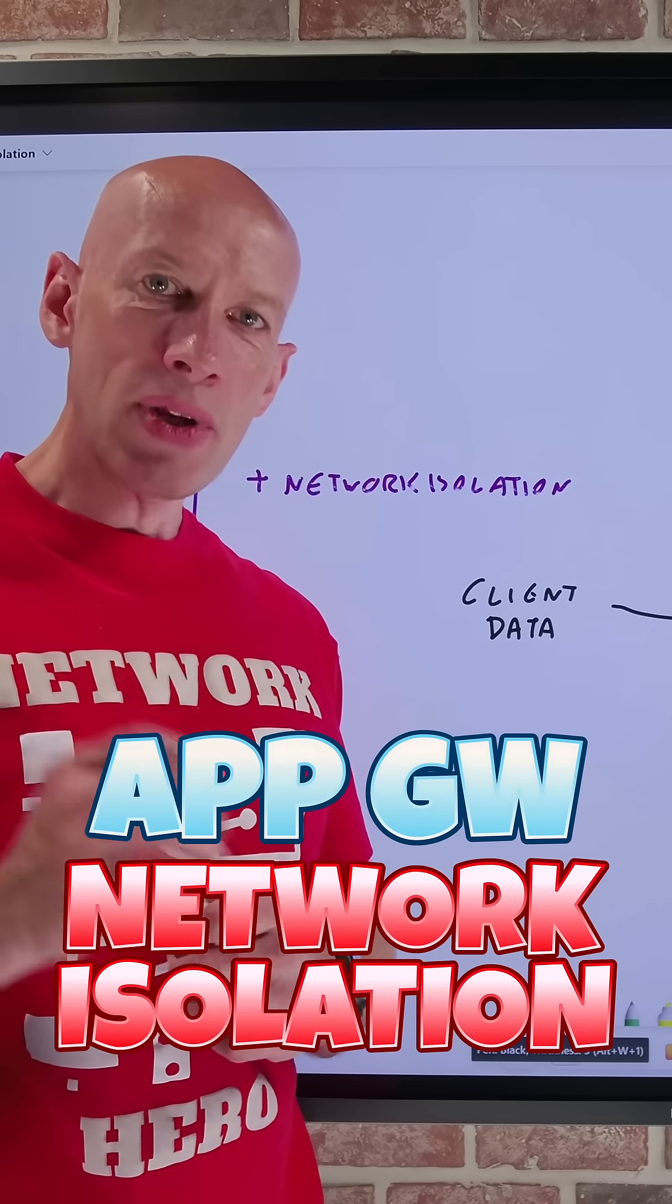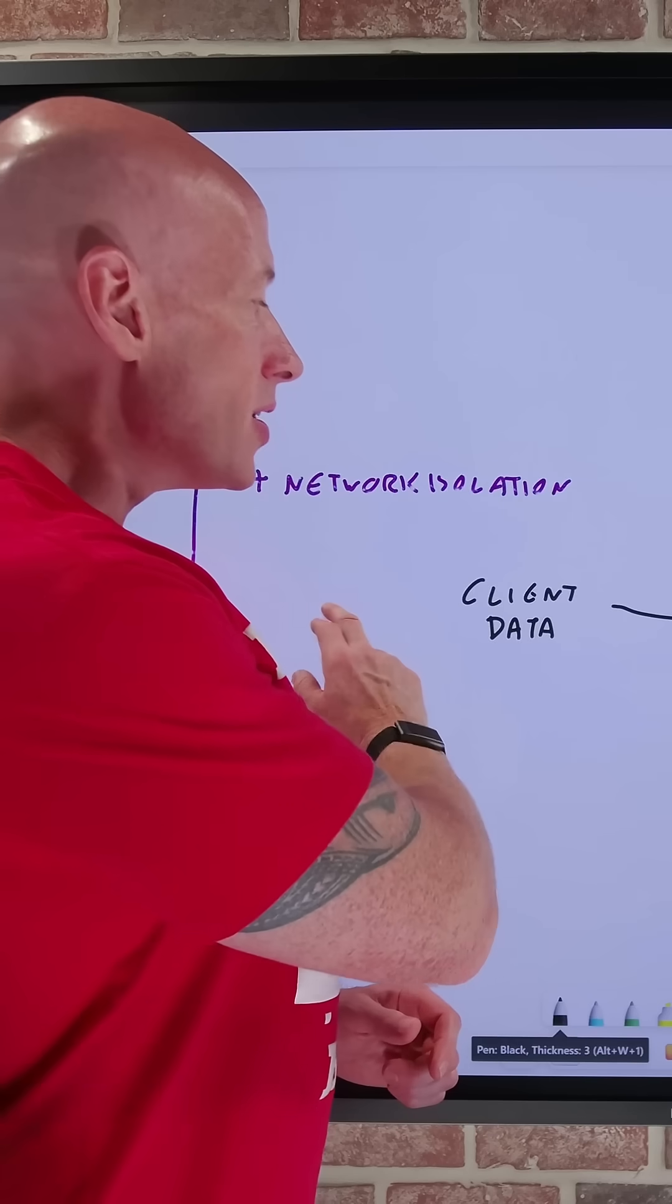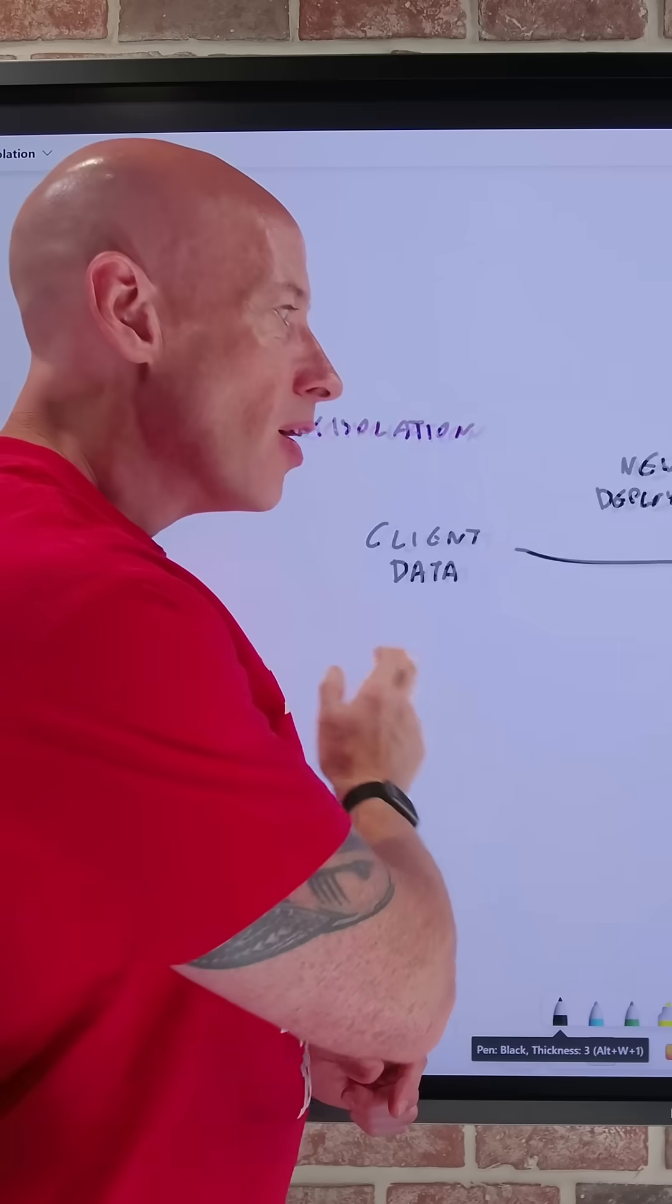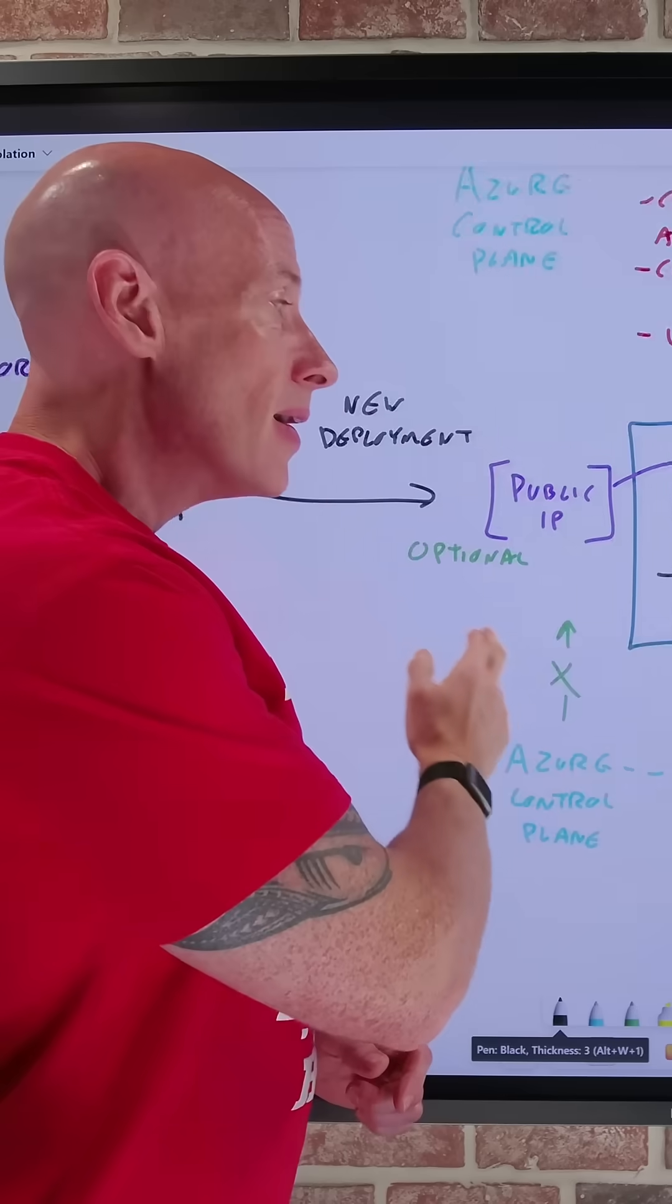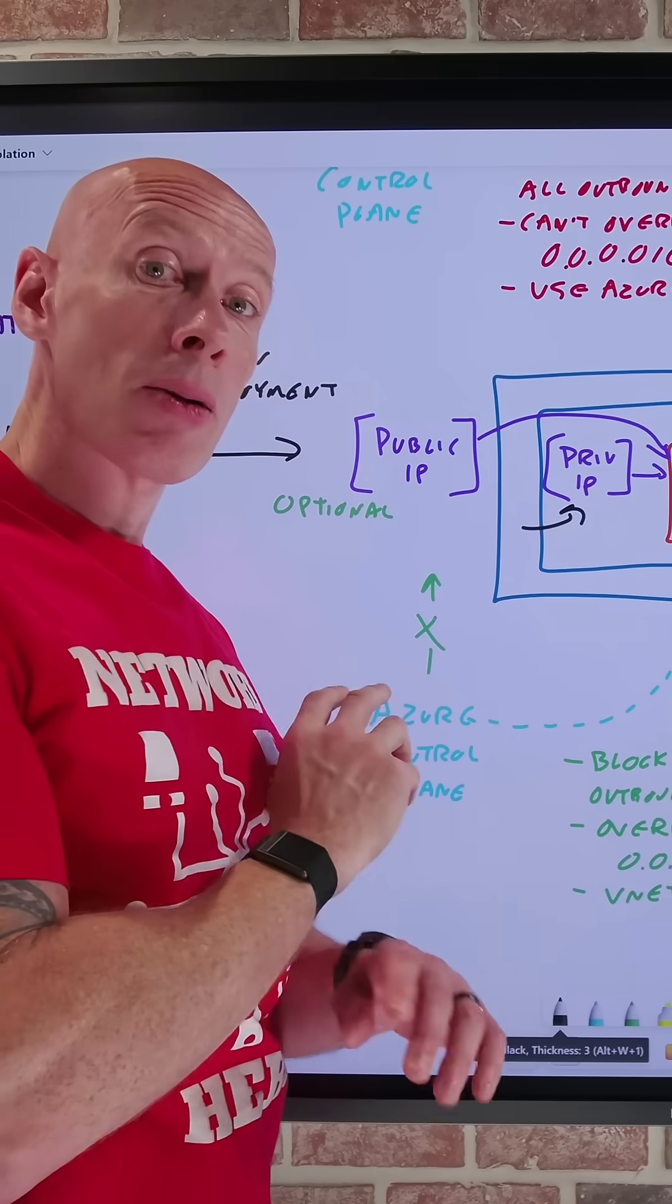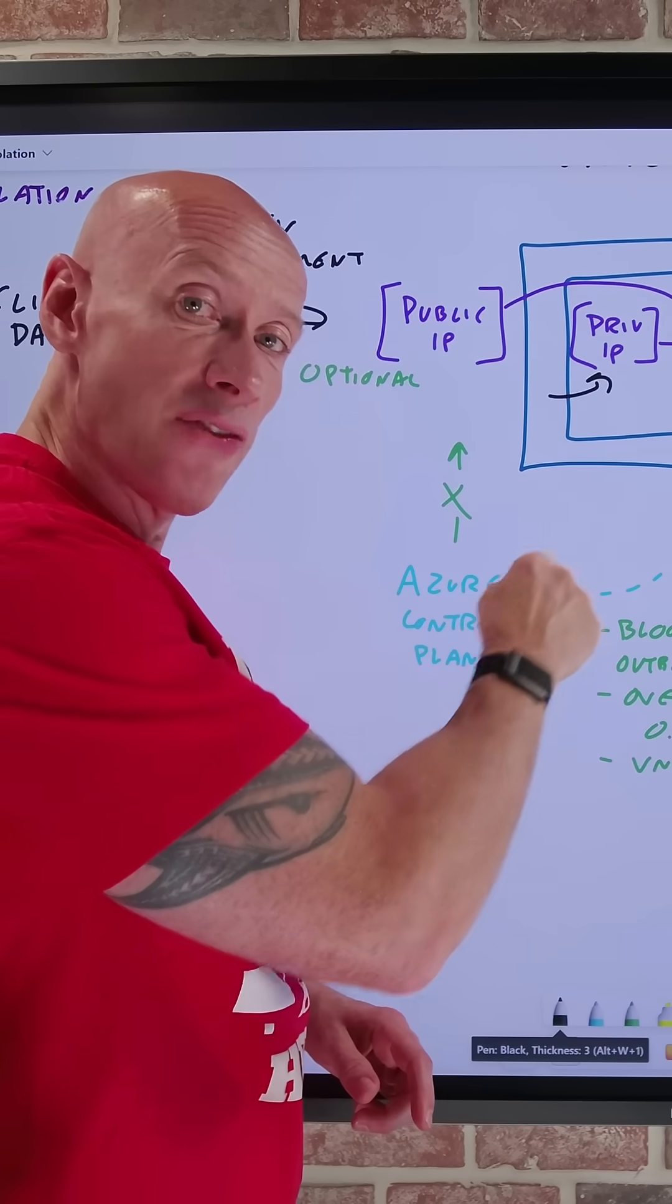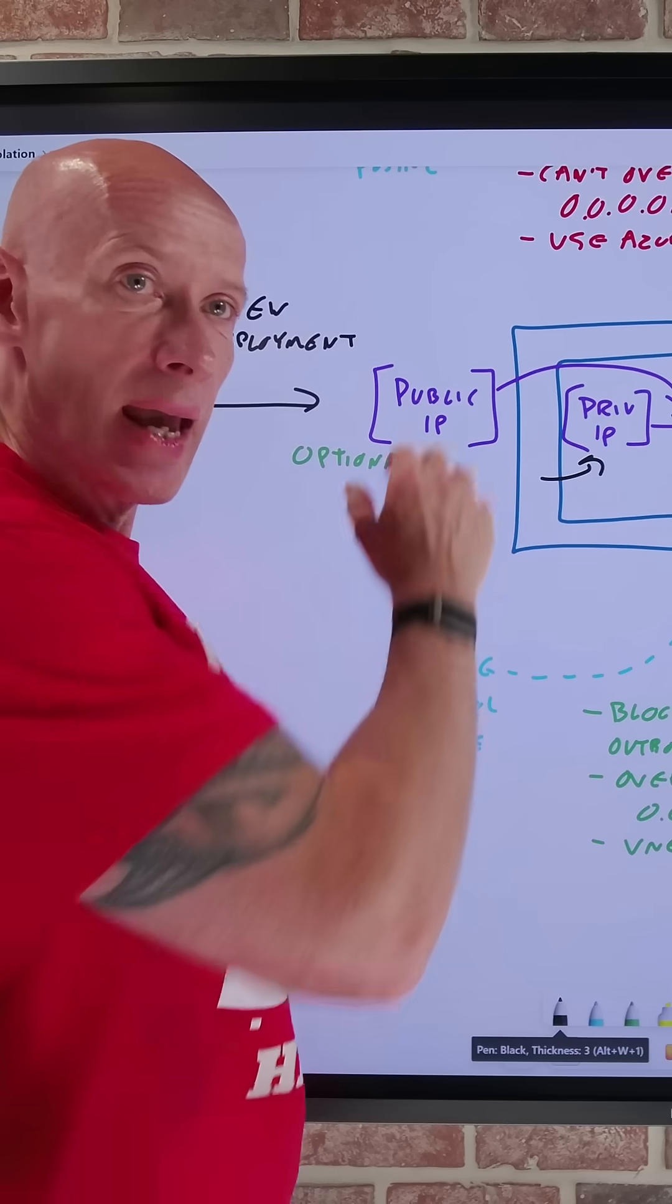In this short, I want to cover the new network isolation option for AppGateway. Once I turn on the new network isolation switch at the subscription level for any new deployments of AppGateway I create, the public IP is now completely optional because the control plane traffic for Azure takes a separate route from that of the public endpoint.